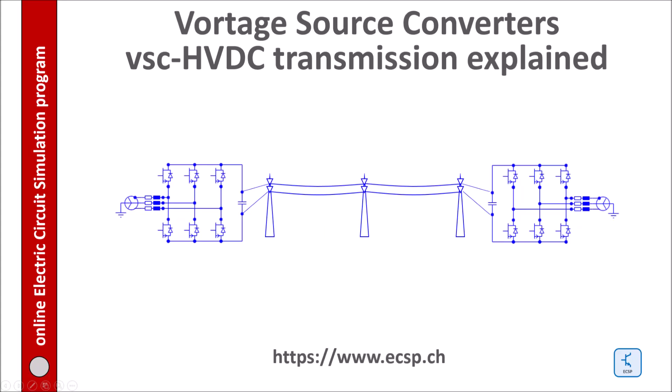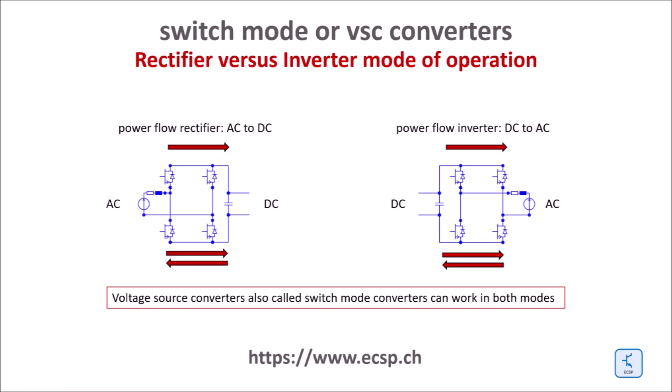Hello everybody, today I want to discuss switch mode converters — they are also called voltage source converters, typically used for state-of-the-art HVDC transmission. For a better understanding I use a single instead of three-phase converter. One converter is placed on each side of a transmission line or cable. A converter converting power from AC to DC is a rectifier, and one converting from DC back to AC is an inverter. This video will explain the basic principle of such converters and how they interact in HVDC transmission systems.